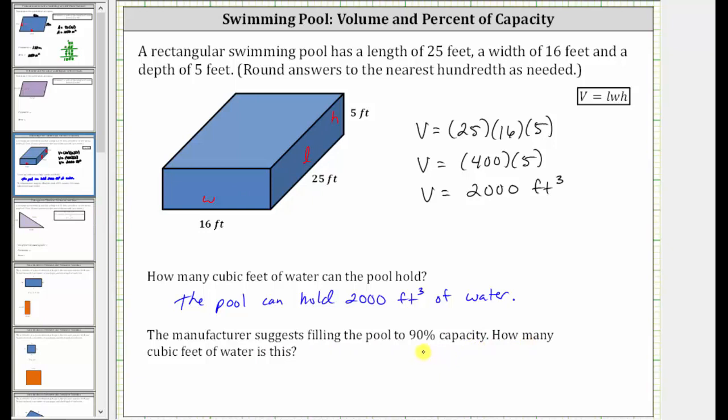To determine how many cubic feet of water 90% capacity is, we need to find 90% of 2,000 cubic feet. So we need to answer the question, what is 90% of 2,000 cubic feet?